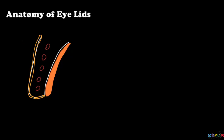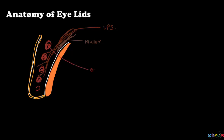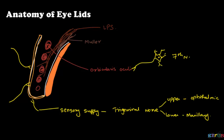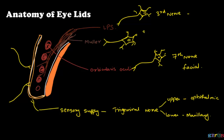Now let's see about the nerve supply to each of these muscles. First, the sensory supply to the eyelids is by the trigeminal nerve, which has three branches. The upper eyelid is supplied by the ophthalmic branch, and the lower by the maxillary branch. The orbicularis oculi is supplied by the seventh nerve, that is the facial nerve. The levator palpebrae superioris is supplied by the third cranial nerve, the oculomotor. Müller's muscle is supplied by the sympathetic chain. Any damage to the sympathetic nerve, as in Horner's syndrome, causes a sign on the eyelid.